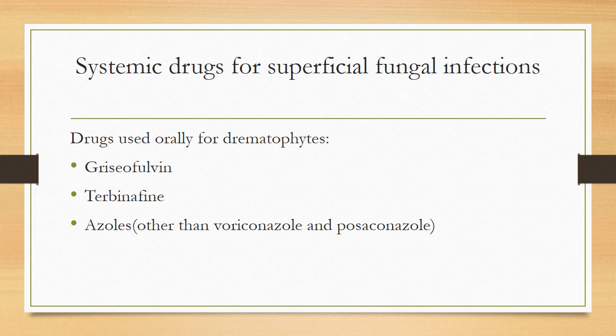Note that systemic drugs useful for superficial fungal infections include griseofulvin, terbinafine, and azoles — except voriconazole and posaconazole, which are used only for deep fungal infections and not for superficial fungal infections.